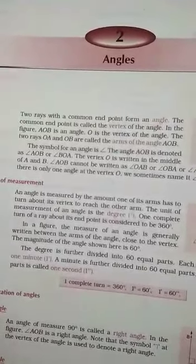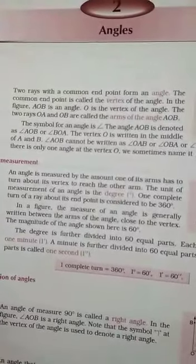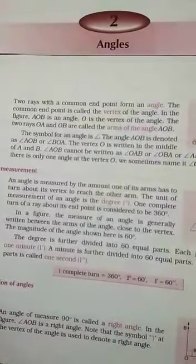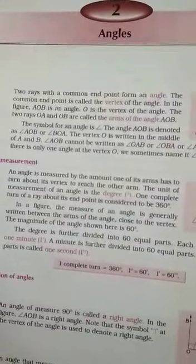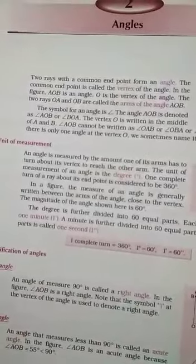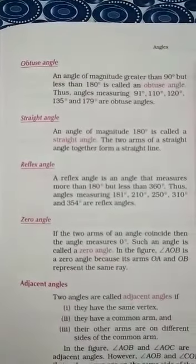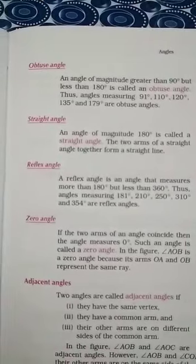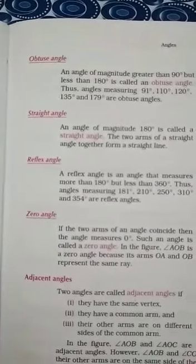First, Right Angle. An angle of measures 90 degree is called a right angle. Second, Acute Angle. An angle that measures less than 90 degree is called an acute angle. Next, Obtuse Angle. An angle of magnitude greater than 90 degree but less than 180 degree is called an obtuse angle.